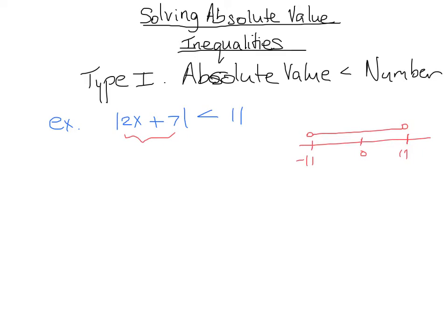Which means that now we can rewrite our inequality to show that 2x plus 7 has to be between negative 11 and positive 11. So once we understand that, now it becomes just a compound inequality.